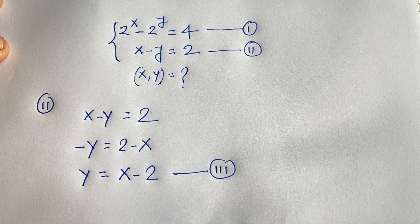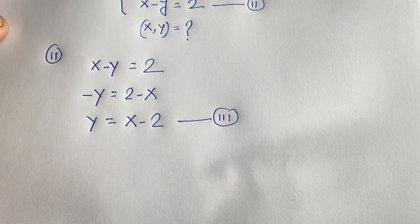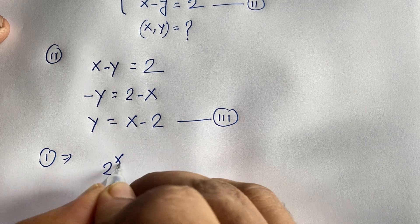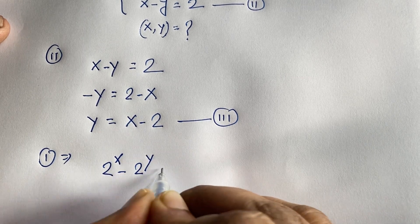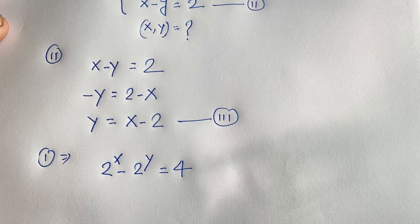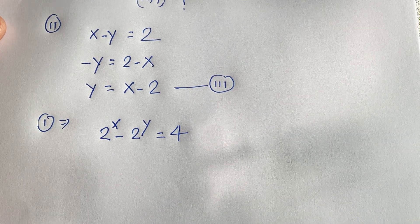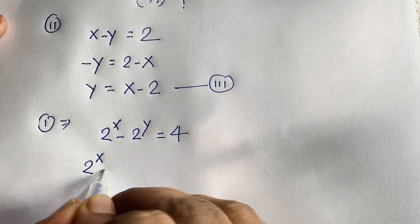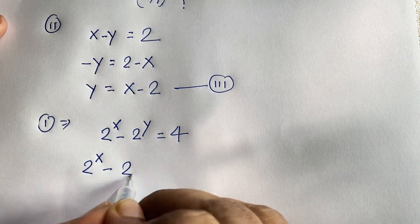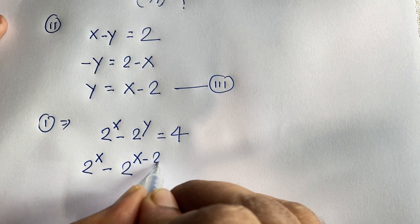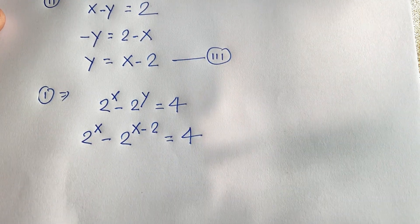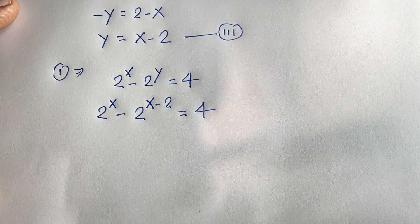So y is equal to x minus 2. Our first equation is 2 to the power x minus 2 to the power y is equal to 4. Now if I substitute this value of y into the first equation, we get 2 to the power x minus 2 to the power (x minus 2) is equal to 4.